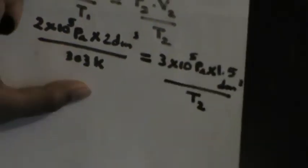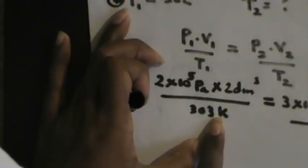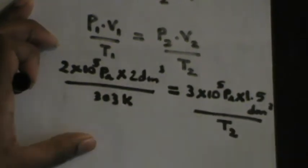On the right side, P2 is 3 times 10 to the power 5, V2 is 1.5 cubic decimeters, divided by T2. Since we are working in absolute temperature throughout, we can find the value of T2 in Kelvin.